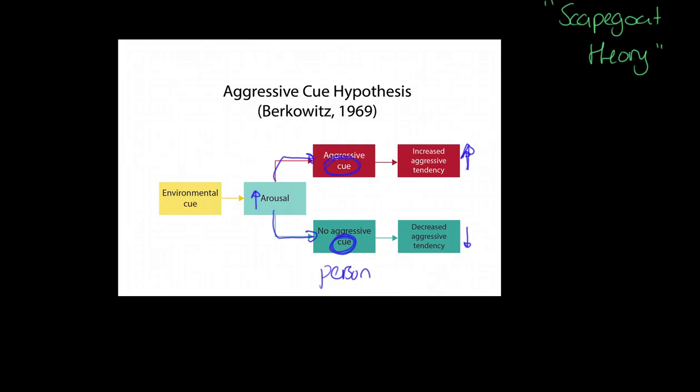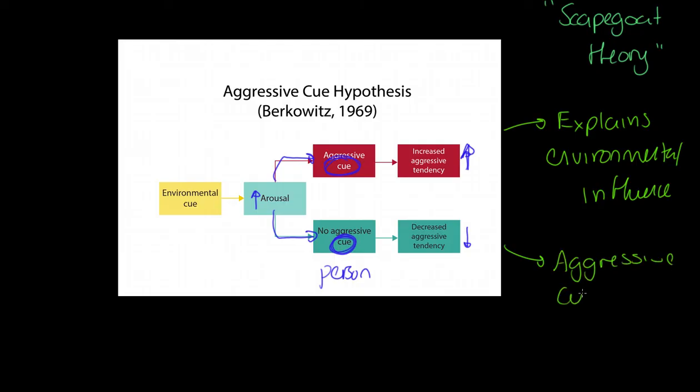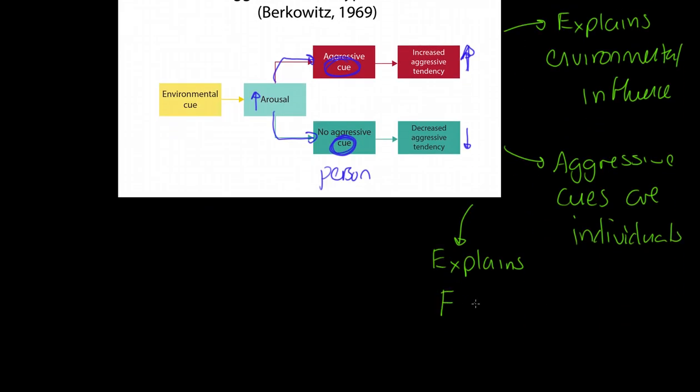There's a couple of strengths and weaknesses. Really good strength is it explains the nature of environmental influence. It doesn't just say the environment plays a part, it specifically says the aggressive cue is the dictating factor. It also states that aggressive cues for me and you are extremely likely to be different to one another. We're different people. It also explains why frustration does not always lead to aggression - because the aggressive cue might not be there.